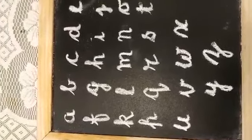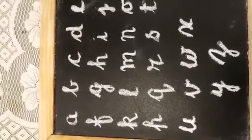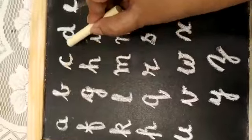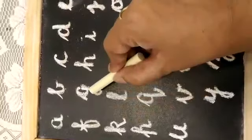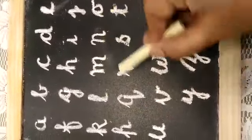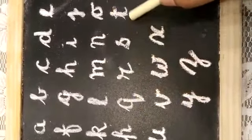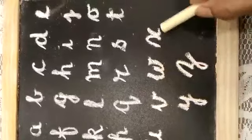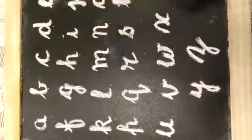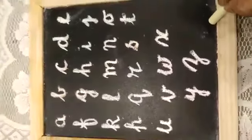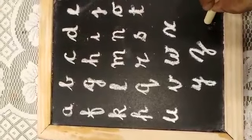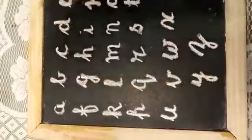Girls, you have already learnt the letters A, B, C, D, E, F, G, H, I, J, K, L, M, N, O, P, Q, R, S, T, U, V, W, X, Y, Z. These letters from A to Z form the alphabet.